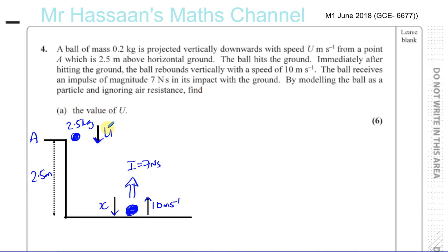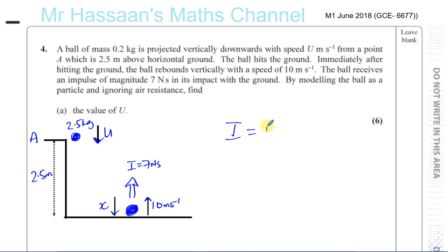To find the value of u, what I need to do first is find the value of x, which is the speed with which it hits the ground. If I can find that speed, I'll be able to work out u, because I know the distance and the acceleration due to gravity. So the first thing is to find x using the magnitude of the impulse of the ground on the ball. The impulse can be found from the change in momentum of the ball.